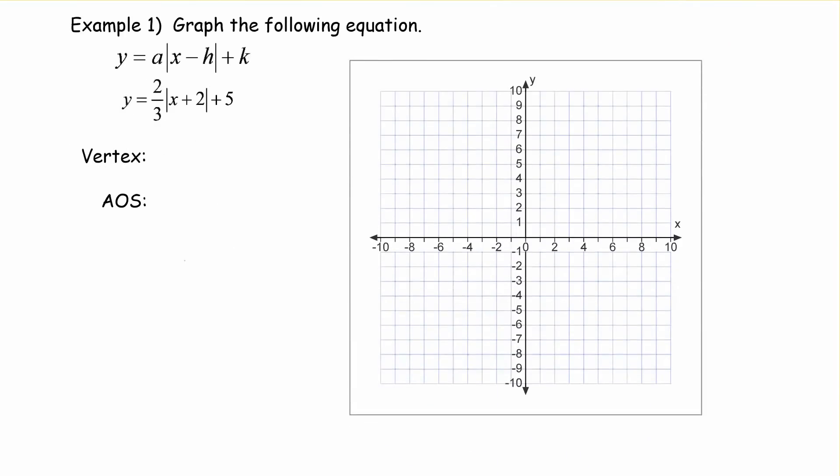So our first example graphing the equation. So we can look at this and we can see that our vertex is the point, the opposite of this. So it's negative 2. And whatever our k value is. So our vertex is the point negative 2, 5. So negative 2, 5. Which is right there.